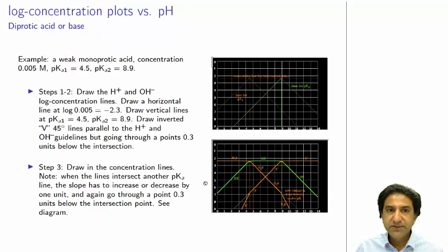Now, let's look at the case of a diprotic acid, how to do that. In this case, 5 times 10 to the minus 3 molar with pKa1 4.5, pKa2 8.9. We go through the same process. We draw vertical, we draw the H-plus and OH lines. Well, perhaps we don't really need to do that. We certainly need to be able to draw lines of slope plus 1 and minus 1.